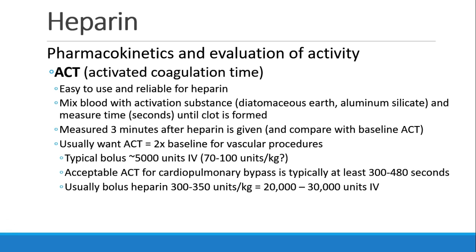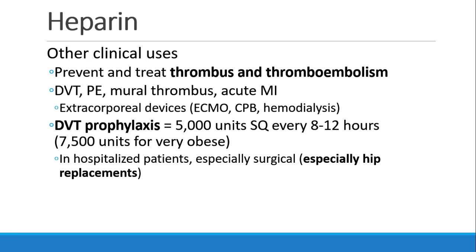For cardiopulmonary bypass, the heparin bolus is 300 to 350 units per kilogram, so we're talking about 20 to 30,000 units of IV heparin. Heparin has many other clinical uses. It can be used to prevent and treat all sorts of clots, like a thrombus or a thromboembolism, like a DVT or a PE, a mural thrombus in the heart, or acute MI. It's used to prevent clots forming when patients are on extracorporeal devices like ECMO, coronary bypass, or hemodialysis. Heparin is also used to prevent deep vein thrombosis in hospitalized patients: 5,000 units subcutaneously every 8 to 12 hours, increasing to 7,500 units for patients who are very obese. This is especially important in surgical patients and especially hip replacement patients.